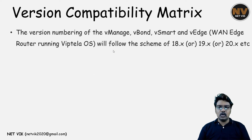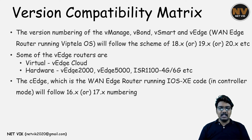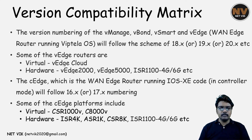We must also make sure that both the controllers and edge routers are on compatible versions. For vManage, vBond, vSmart and vEdge — the edge routers running Viptela OS — the version numbering scheme will be like 18.x, 19.x or 20.x. Some vEdge routers include vEdge Cloud (virtual), and hardware platforms such as vEdge 2000, vEdge 5000, ISR 1100 4G and 6G, which run Viptela OS. For cEdge routers running IOS XE, the version scheme is like 16.x or 17.x. cEdge platforms include CSR 1000V, CAT 8KV (virtual), and hardware platforms ISR 4K, ASR 1K, CAT 8K and ISR 1100 4G and 6G, which can also run Cisco IOS XE SD-WAN code.